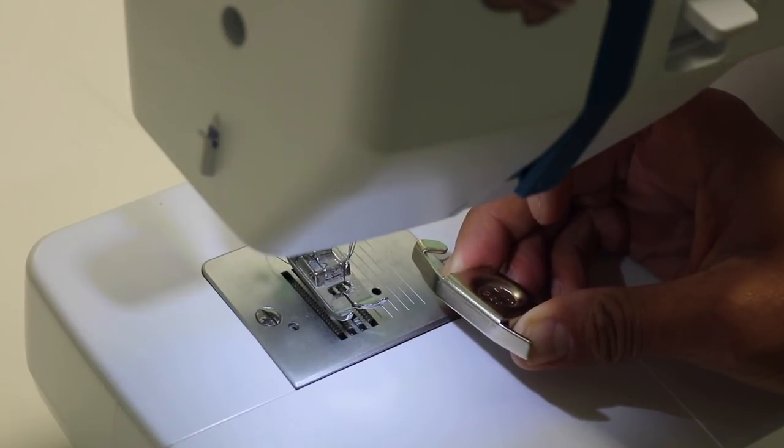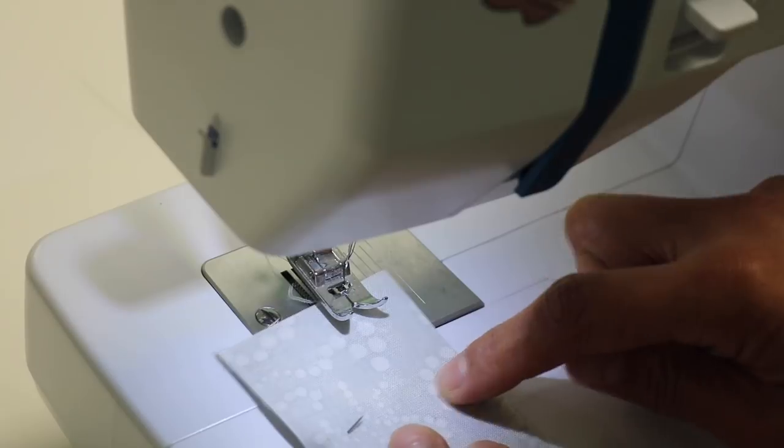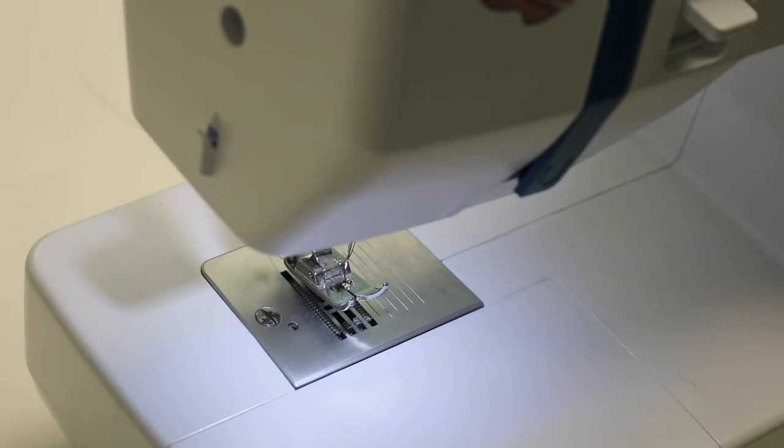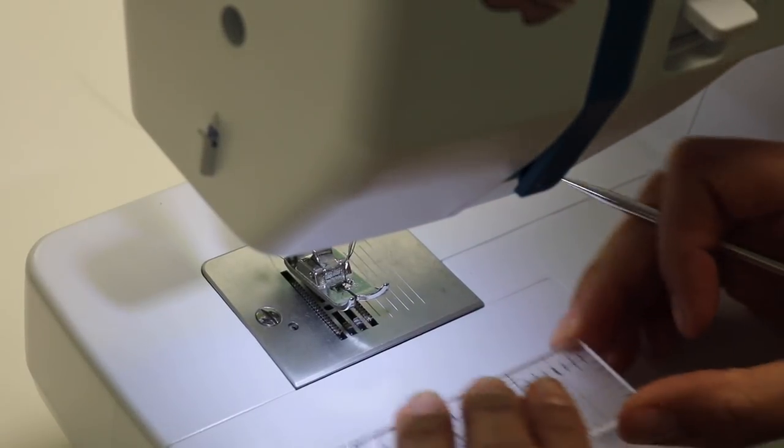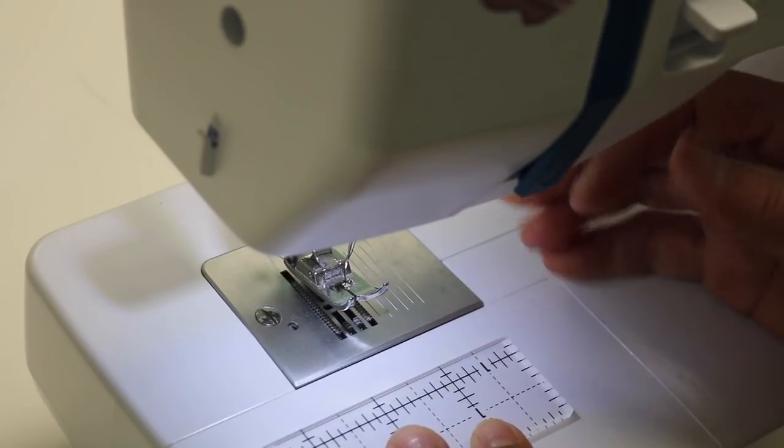Because that's where my stitches are going to be. So I want it to be 5/8 of an inch in from the raw edge of the fabric. So to place my magnetic seam guide exactly where I need it, let's say I need it to be 5/8 of an inch seam allowance.